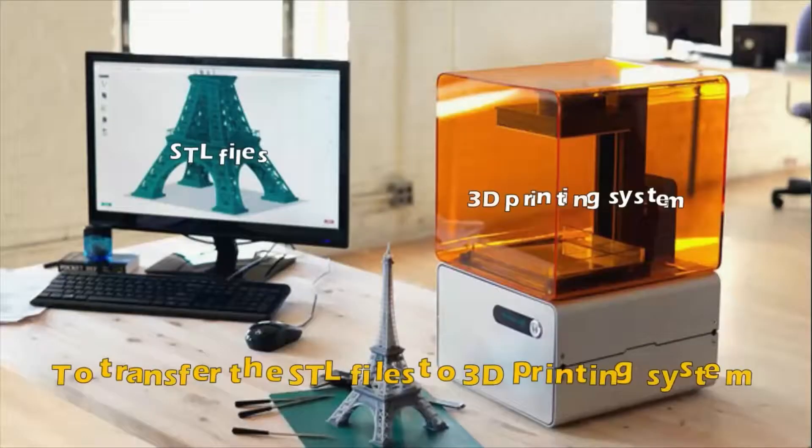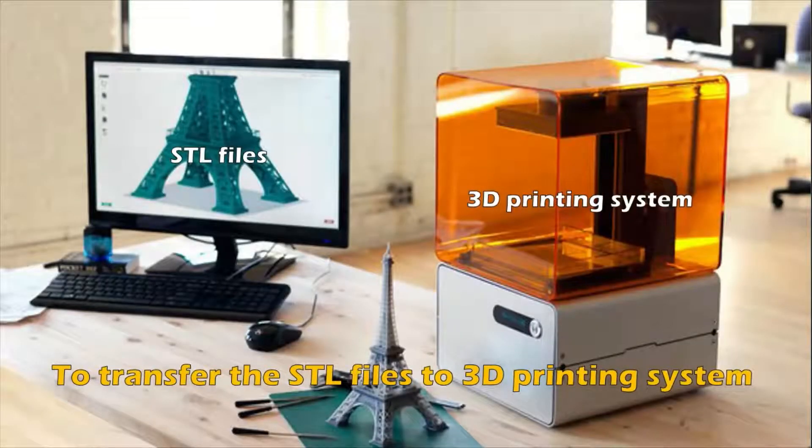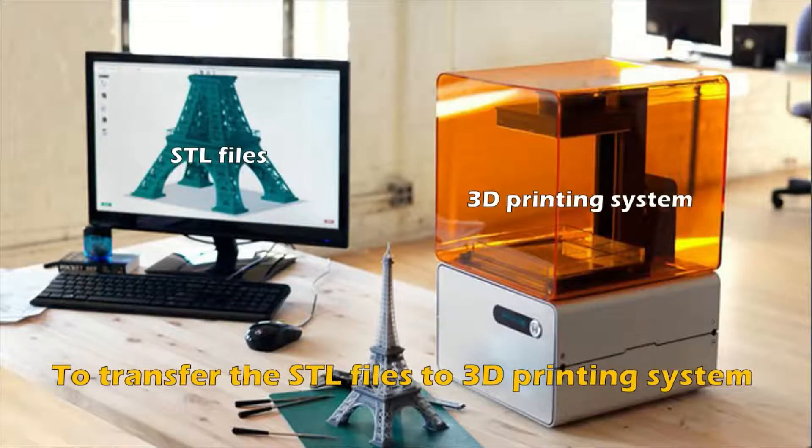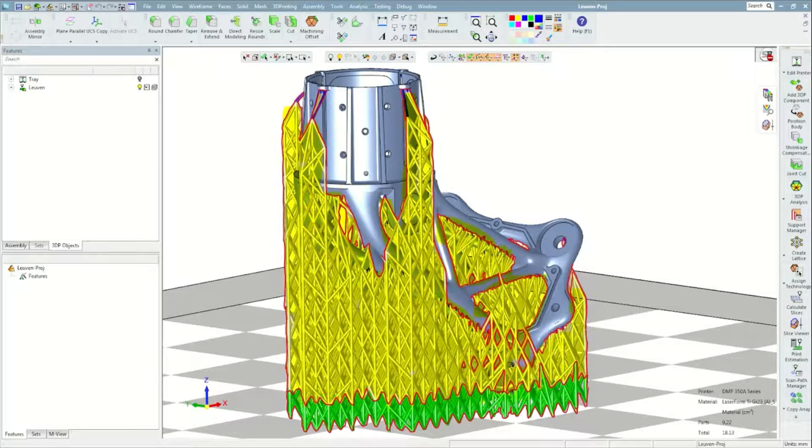Then the operator loads a 3D CAD solid model file into the system. For the parts to build we need supports, so supports are designed to stabilize the part during building.